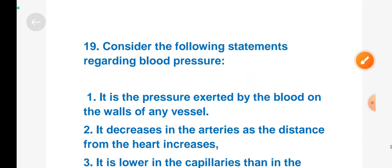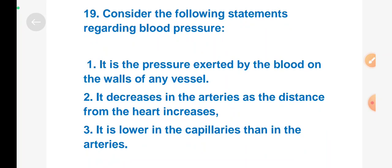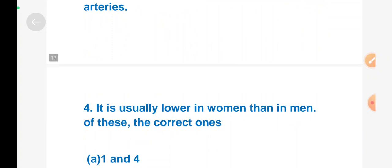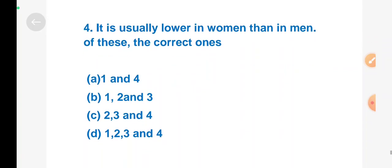Next question: Consider the following statements regarding blood pressure. Option A: It is the pressure exerted by the blood on the wall of any vessel. Option B: It decreases in the arteries as the distance from the heart increases. Option C: It is lower in the capillaries than in the arteries. Option D: It is usually lower in women than in men. Of these, which one is correct? Option A: 1 and 4, Option B: 1, 2 and 3, Option C: 2, 3 and 4, Option D: 1, 2, 3 and 4. Right answer is Option D, 1, 2, 3 and 4. All the statements are correct.